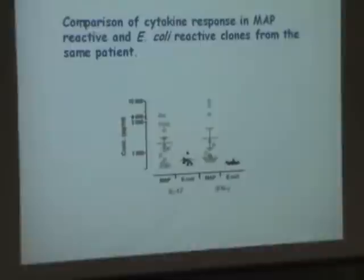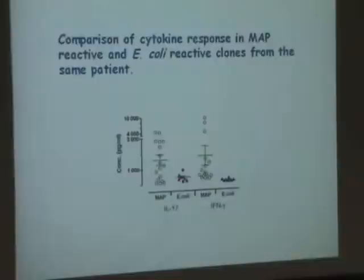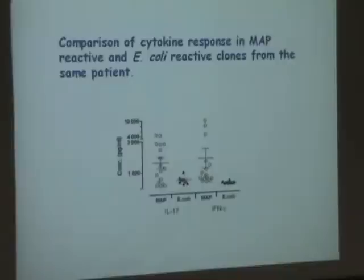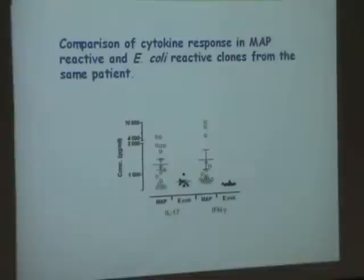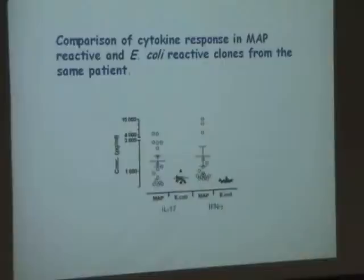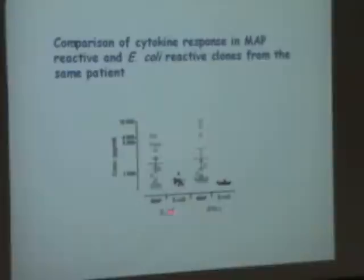As you may remember, we had one patient that showed a very mixed response — it responded to E. coli and also showed a very strong response to MAP. From this patient I already had 17 clones that responded to MAP. We decided to try to make T cell clones that also responded to E. coli from this patient, and also from the other patient that had a strong E. coli response. But we only managed to get eight clones from this patient with the mixed reaction. We wanted to test whether these clones had the same cytokine pattern, and they sort of do, but the response of T cell clones to MAP is much stronger than the response to E. coli — they produce a lot more cytokines.